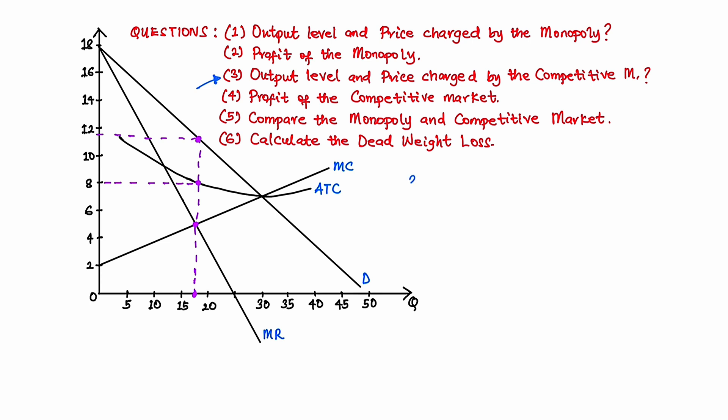Next, question 3: we need to determine the output level and the price charged by the competitive firm. The competitive market in this instance represents the perfectly competitive market. In a perfectly competitive market, the rule for profit maximization is also marginal revenue equals marginal cost. However, since we are dealing with the market as a whole, the marginal revenue is the demand and the marginal cost is the supply. So the output level and price are determined by the point where demand equals supply.